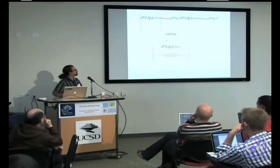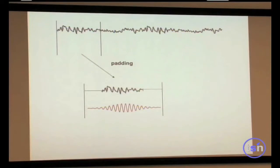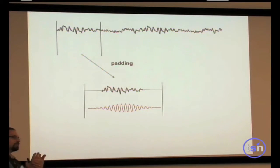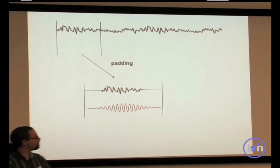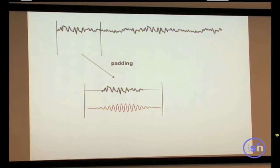Another technique is frequency padding, which consists of adding zeros on the side of each extracted window. This artificially increases the frequency resolution. For example, doubling the window size with zeros turns a 1 Hz increment power spectrum into a 0.5 Hz increment spectrum. You could alternatively smooth the spectrum to get 0.5 Hz resolution, but zero-padding is a more elegant way to achieve this.